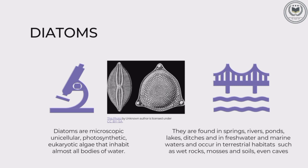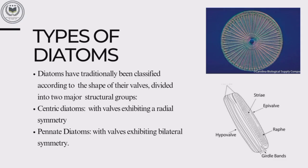So diatoms are unicellular, photosynthetic, eukaryotic microalgae. They can be found in various water bodies. The next slide covers types of diatoms.